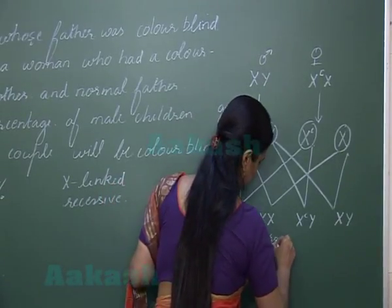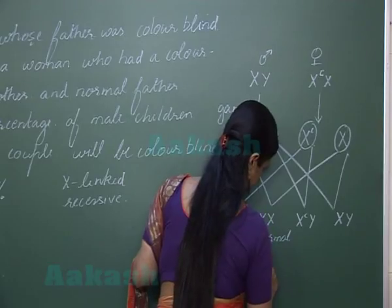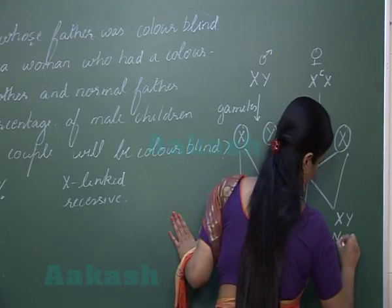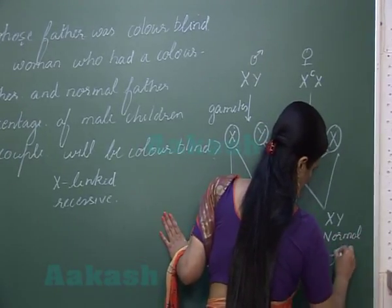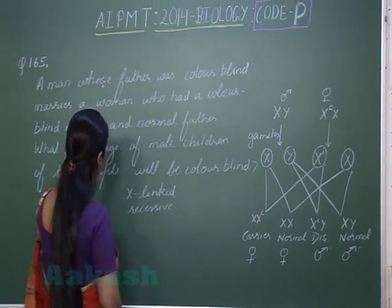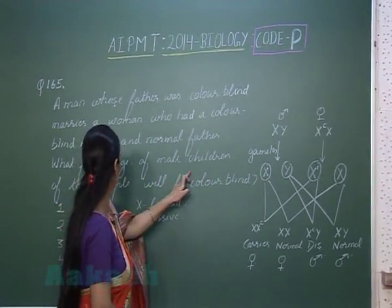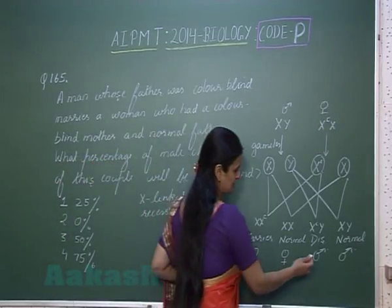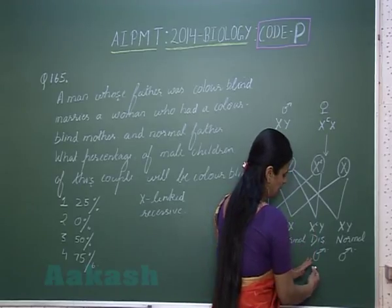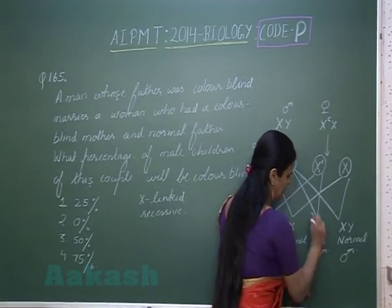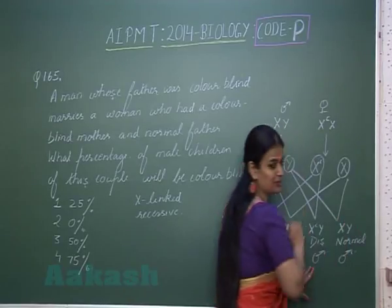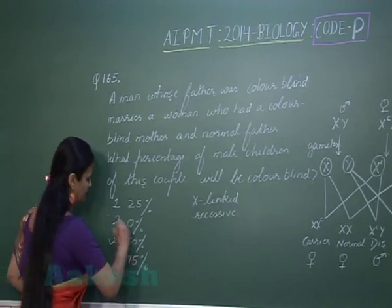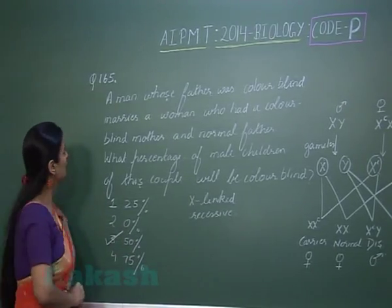So we have: carrier female, normal female, diseased male, and normal male. The question asks what percentage of male children of this couple will be colorblind. In the total male population, 50% are diseased and 50% are normal. So the right option is option number 3.